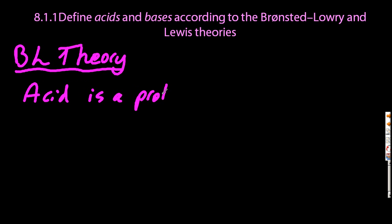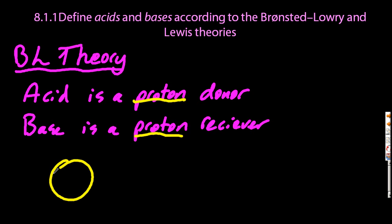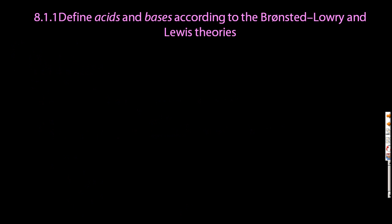Acids are proton donors — anything that can give away a proton is an acid. A Bronsted-Lowry base, of course, is a proton receiver. So what's a proton? If you take a hydrogen atom and strip off an electron, you're just left with a proton. A proton is really H⁺, a hydrogen ion.